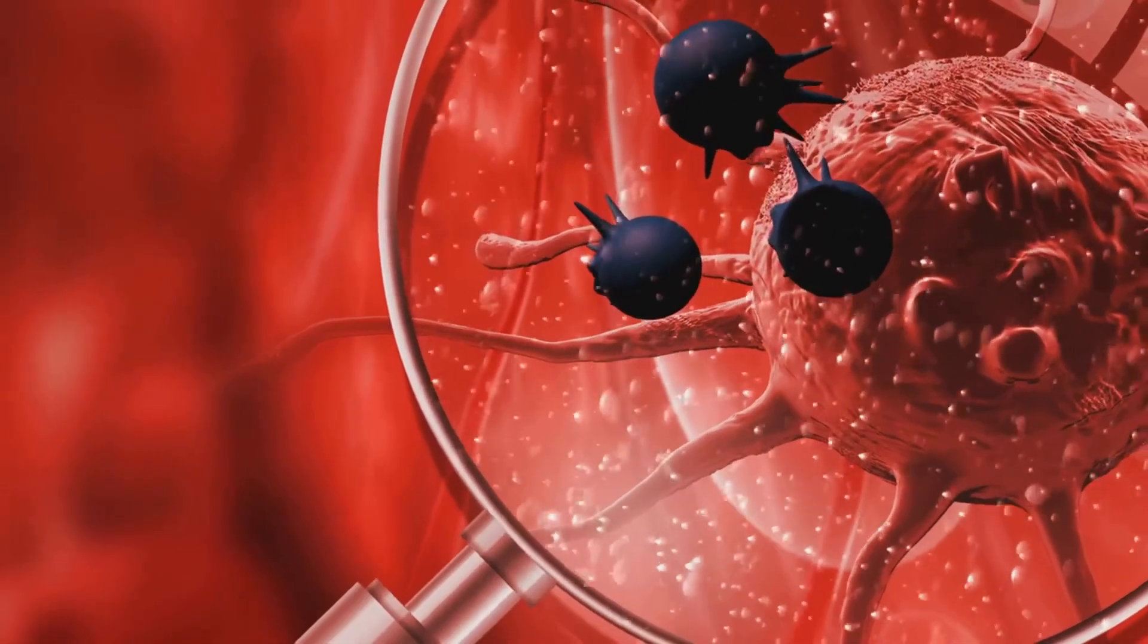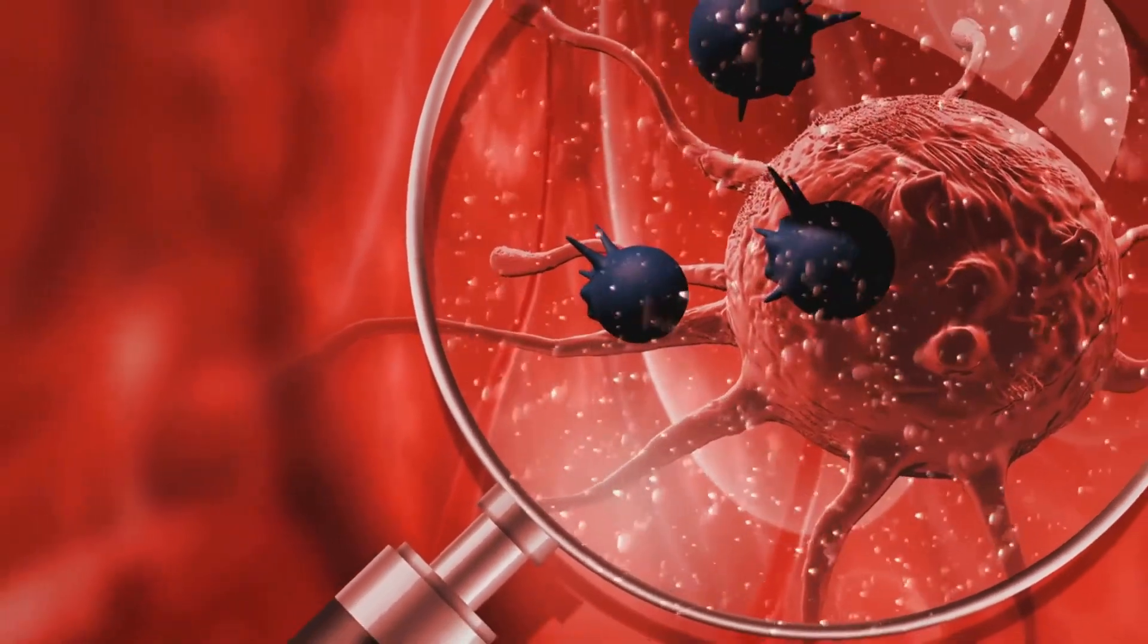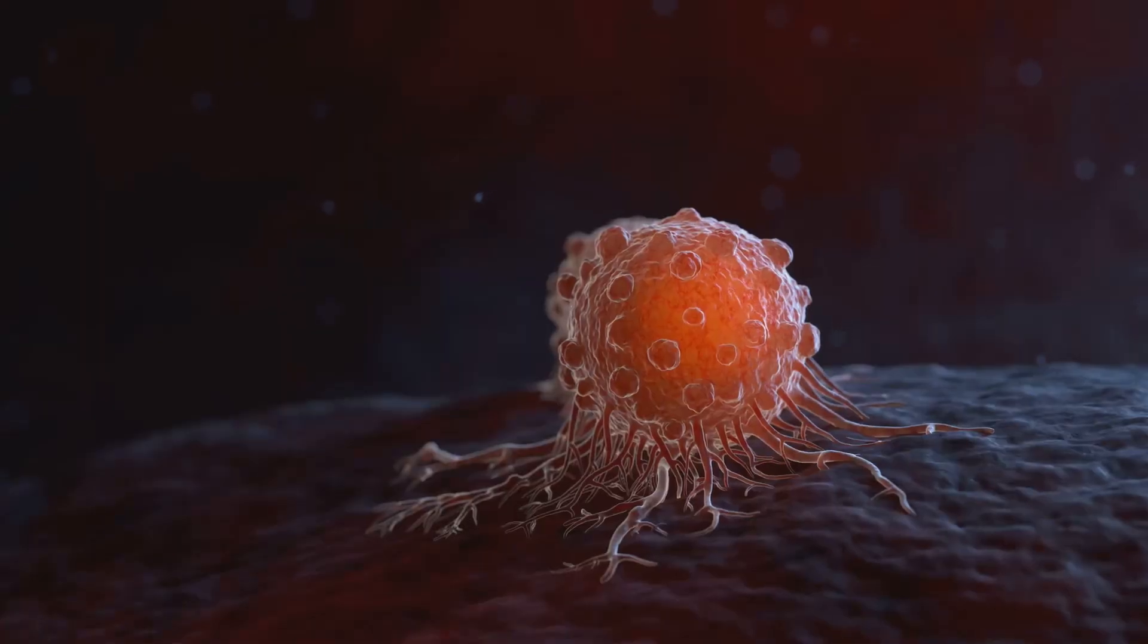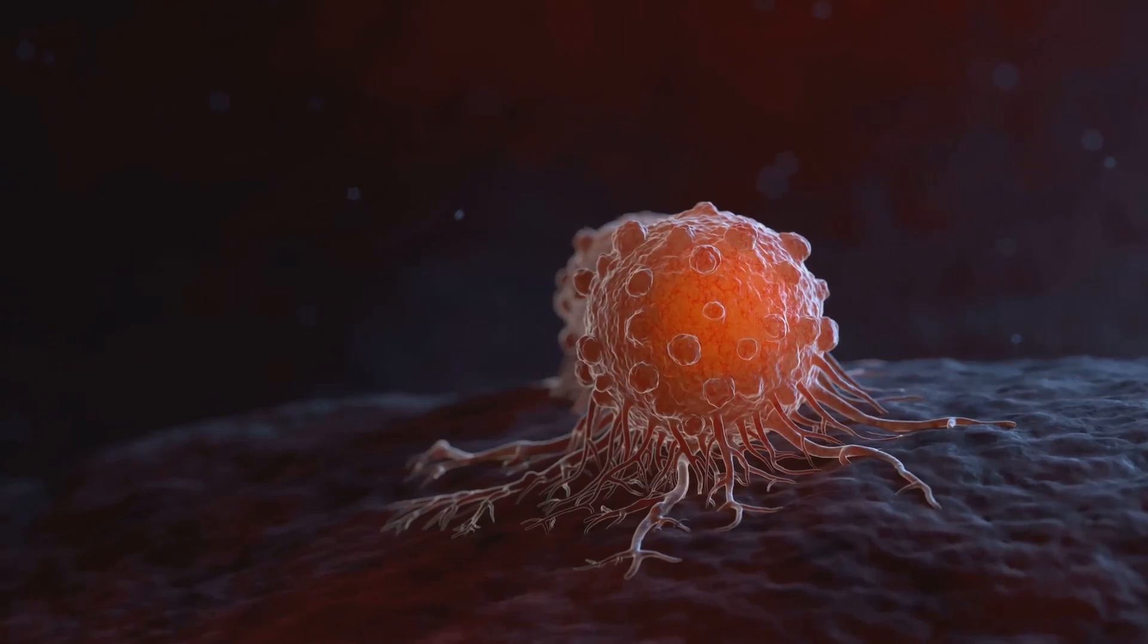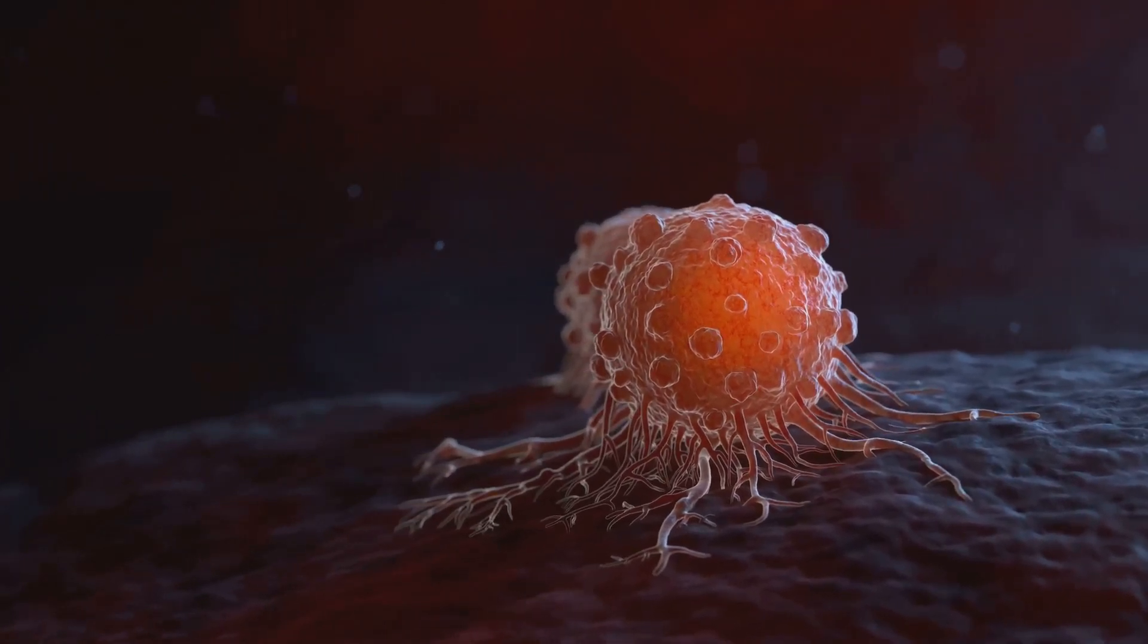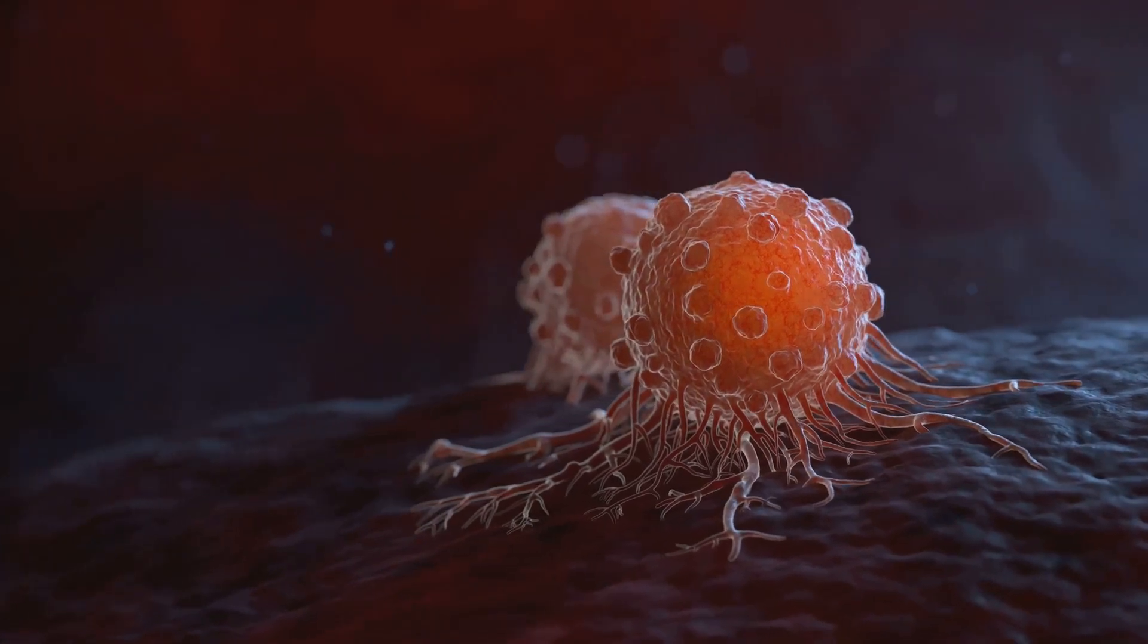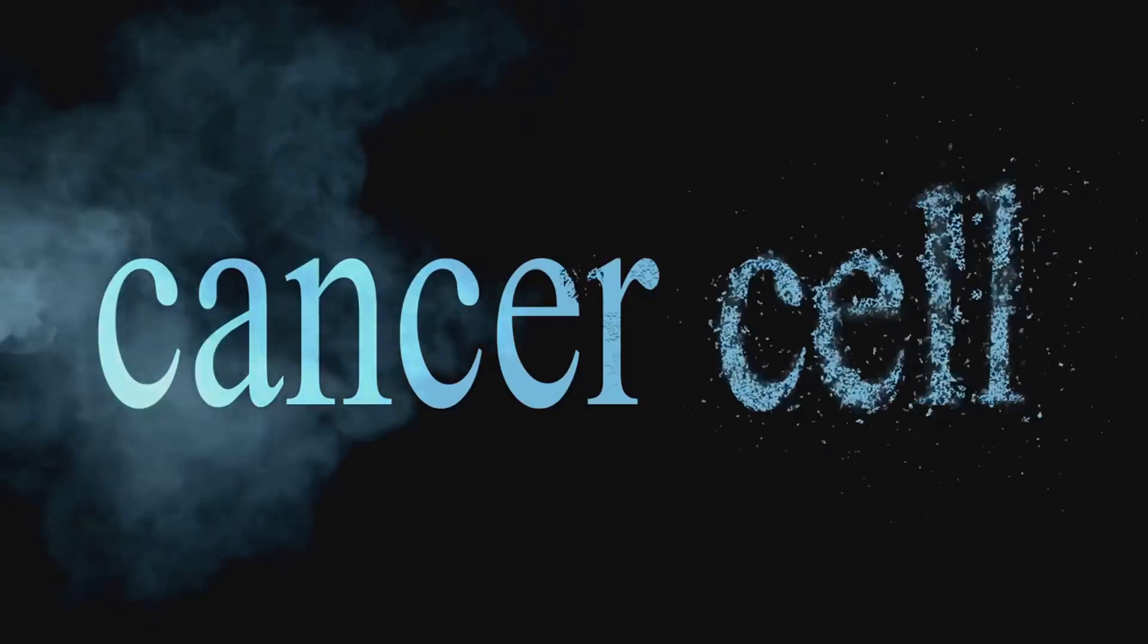Cancer cells, with their rapid growth and proliferation, often exhibit high levels of ER stress. While the UPR initially helps cancer cells survive under stressful conditions, prolonged ER stress can also trigger cell death, offering a potential target for cancer therapy. Researchers are exploring ways to manipulate the UPR to selectively kill cancer cells.